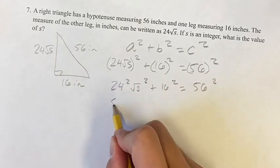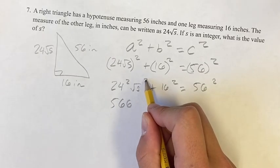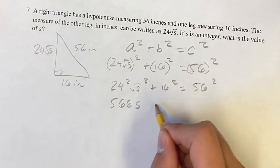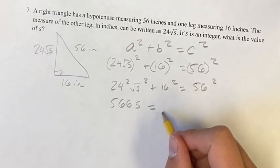Therefore, we get 576. The square root of s squared is just s. That's true for anything. Take the square root of it and square it, same thing. It's equal to 56 squared minus 16 squared.